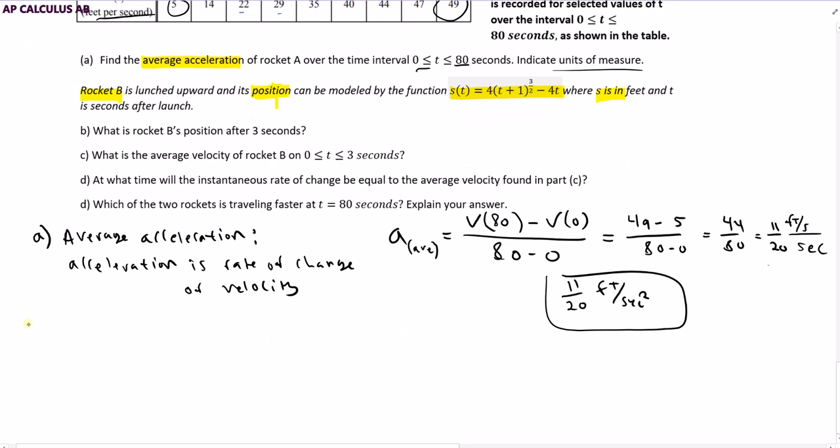What is rocket B's position after three seconds? So I want to know the position after three seconds. All I got to do is take my position function and plug in three. Everywhere I see a T, I'm going to plug in three. So S(3) is the position after three seconds.